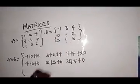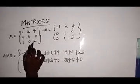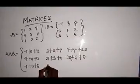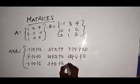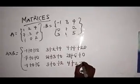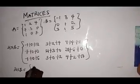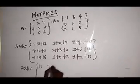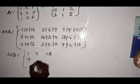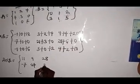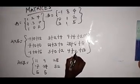For the last row: 1 times minus 1 is minus 1, plus 1 times 0 is 0, plus 1 times 0 is 0. Then 2 times 3 is 6. Then 1 times 3 is 3, plus 0 times 1 is 0, plus 2 times 1 is 2. Then 1 times 4 is 4, plus 0 times 2 is 0, plus 2 times 5 is 10. So your A times B result gives: first row [11, 9, 28]; second row [minus 7, 24, 32]; last row [5, 5, 16].